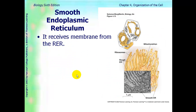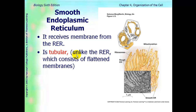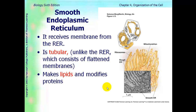The next organelle is the smooth ER. Smooth ERs do not have the same function as the rough ER. Smooth ERs receive their membranes from the RER, which means they're connected. The rough ER has ribosomes attached to it; the smooth ER is connected to that but is smooth — it does not have ribosomes. They're more tubular as well. They make lipids, modify proteins, and also have a role in detoxifying drugs in our body.